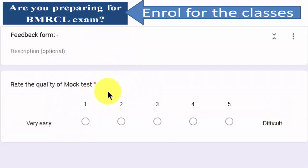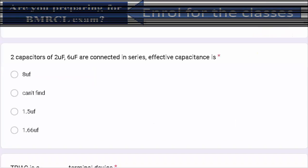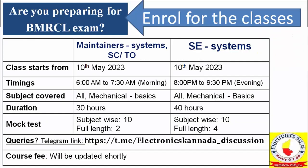You have to continue to the next session, then rate the quality of the mock test. If it's easy, choose option 1; if it's very easy, choose option 1. If it's difficult, choose option 5. Then you are going to submit. This is how you are going to take the mock test. Keep taking the mock test — definitely you are going to clear the exam this time. We have started the course for RRB exams. We are conducting separate classes for SCTO, maintainers and section engineer systems. If you are interested, join our Telegram group. Thank you, all the best for your exams.